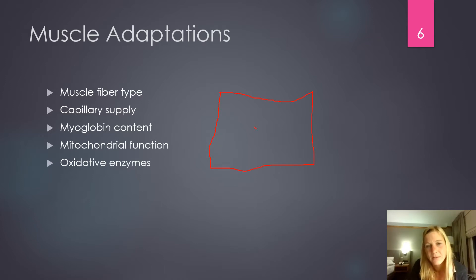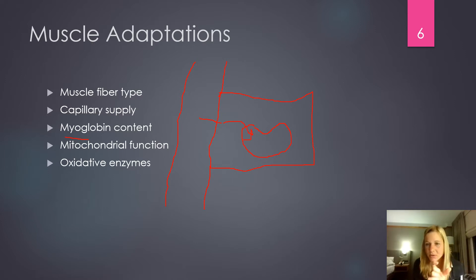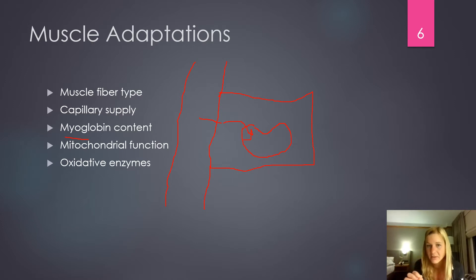Myoglobin is a molecule inside the cell whose job is to carry oxygen from the edge of the cell to the mitochondria — like a little transporter getting oxygen to whatever mitochondria need it within the cell. As you might expect, we'll increase the myoglobin content within the cells we utilize as we become more highly trained. Myoglobin content can increase by as much as 70 to 80 percent, which allows us to quickly move oxygen from the edge of the cell to the mitochondria.